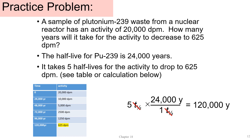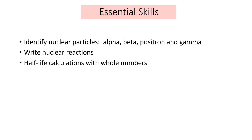Essential skills for the final: first, identify nuclear particles — alpha, beta, positron, and gamma. Remember gamma is not a particle, it is energy. Second, write nuclear reactions — putting those particles on your note card is recommended. Third, do simple half-life calculations with whole numbers using the table method.